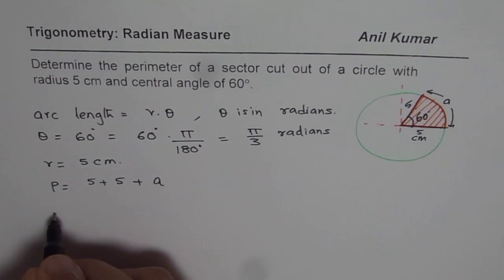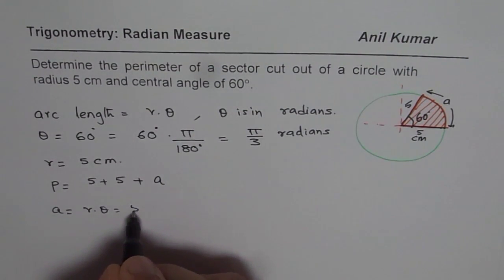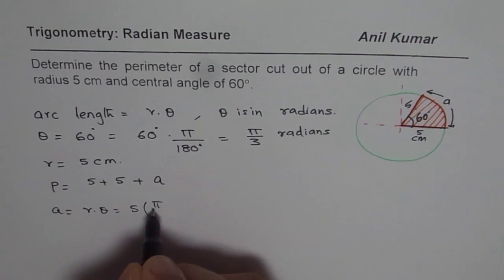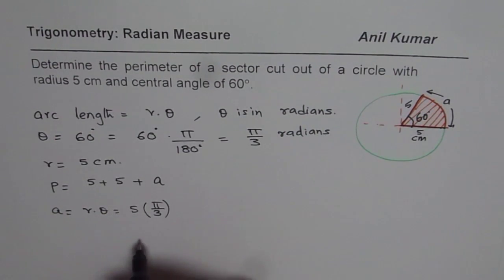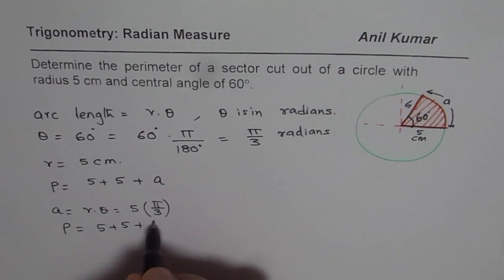So let us find what a is. So a equals r theta, r is 5 and theta is π by 3. So 5π by 3. Substituting this value here, we get that the perimeter is 10, 5 plus 5 plus 5π by 3.